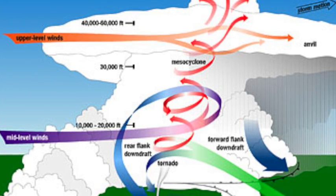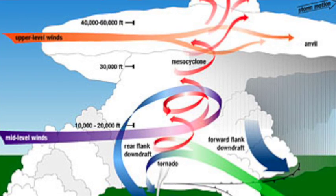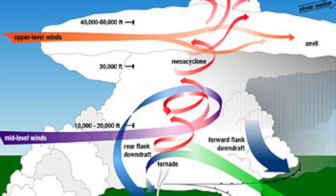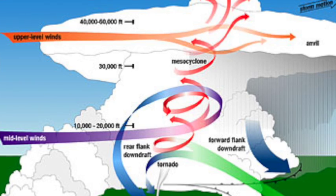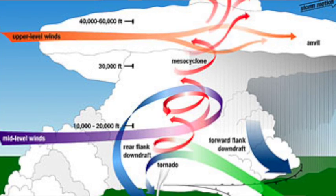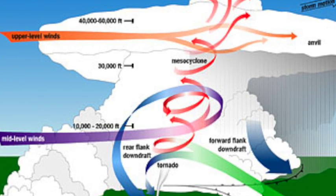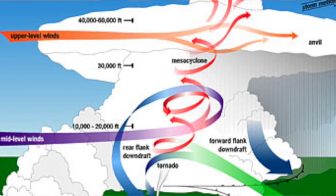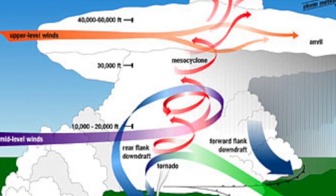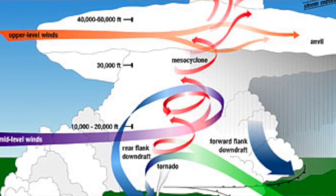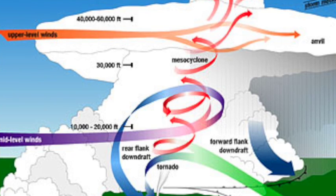A supercell thunderstorm has a few main parts that affect tornadoes. A few of them is the updraft that goes to the middle, which hopefully I have a picture here that you can see.